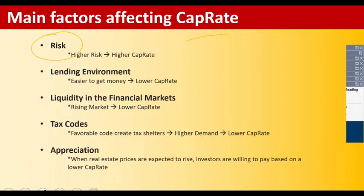Detroit has been losing population for a long time. In areas like the San Francisco Bay Area that have lower cap rates, the lending environment is flexible — it's easier to get money. On the flip side, if you're trying to get money for a property in Detroit, Michigan, you're going to run into more challenges and have to go through more scrutiny.